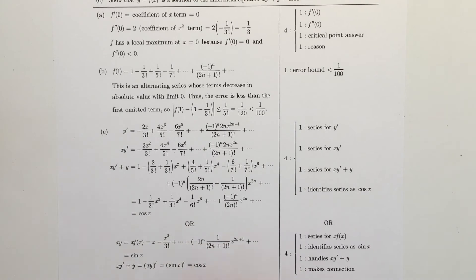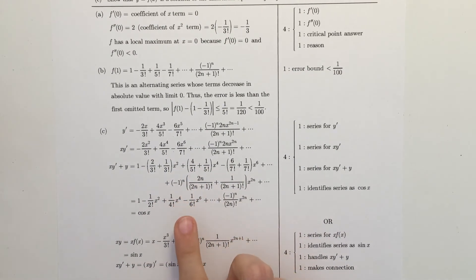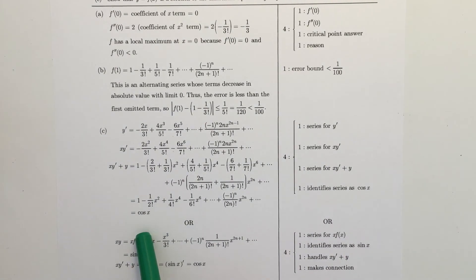This looks very confusing, but all they did is group together the terms that had similar x powers. For example, they grouped together the coefficients that are in front of the x squared term for x, y prime, and y. They also did this for the general term. Then, all they did was simplify this, and, as you can see, it handily comes out to be cosine of x.